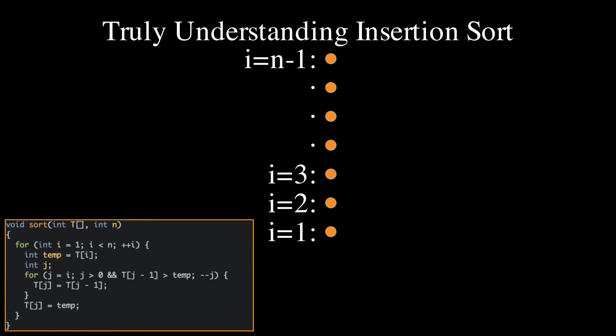In the worst case, the inner loop makes j loop from i all the way down to zero, without stopping early due to the second stopping condition. This means that the inner loop can have at most i iterations, with each iteration taking constant time. Therefore, we add i dots to account for the inner loop, and we do this for each value of i.